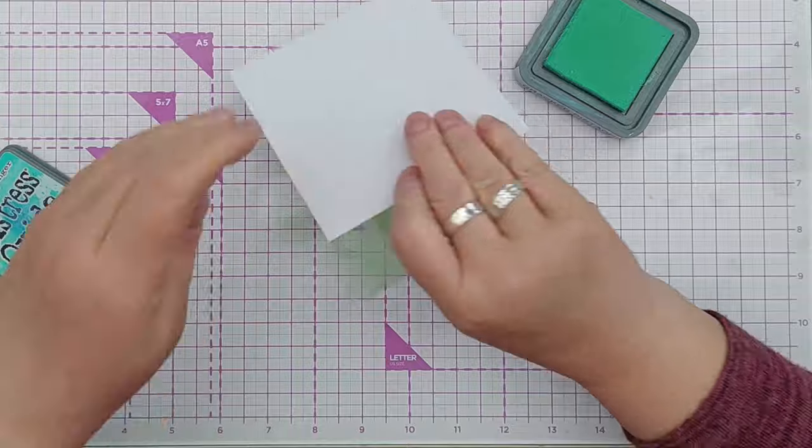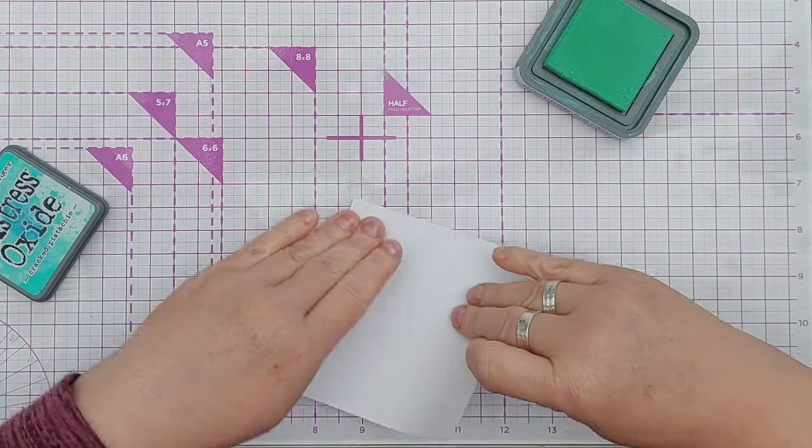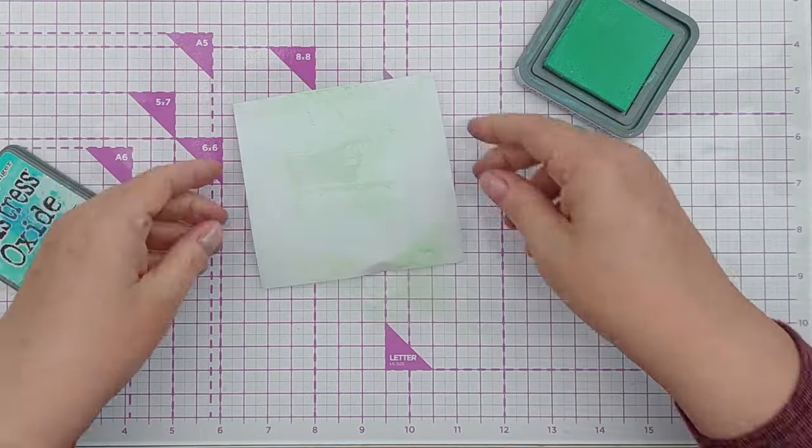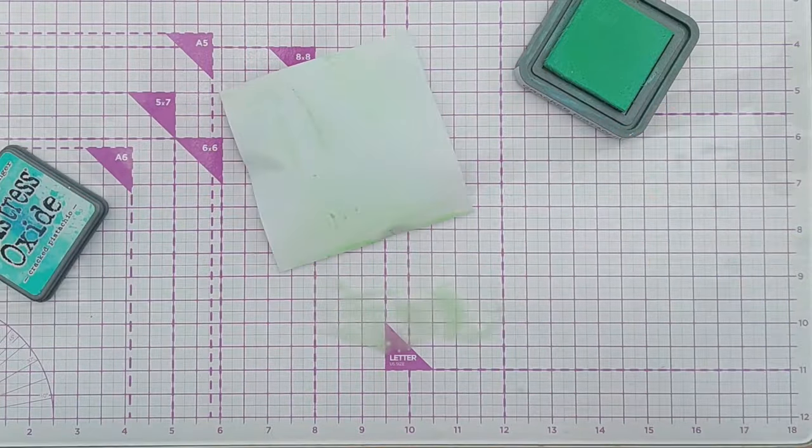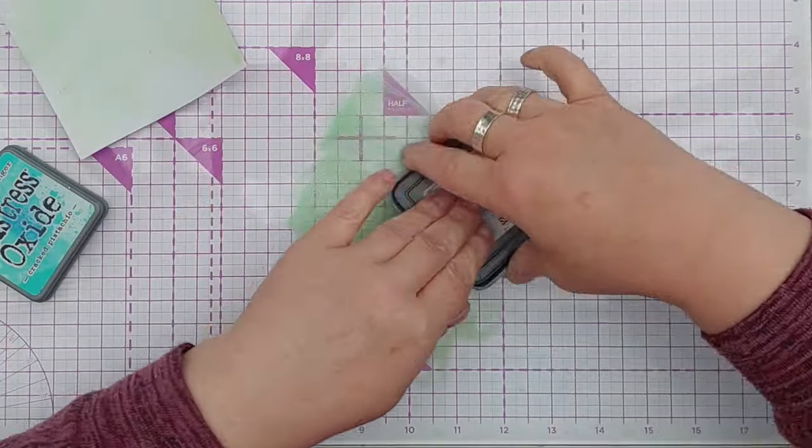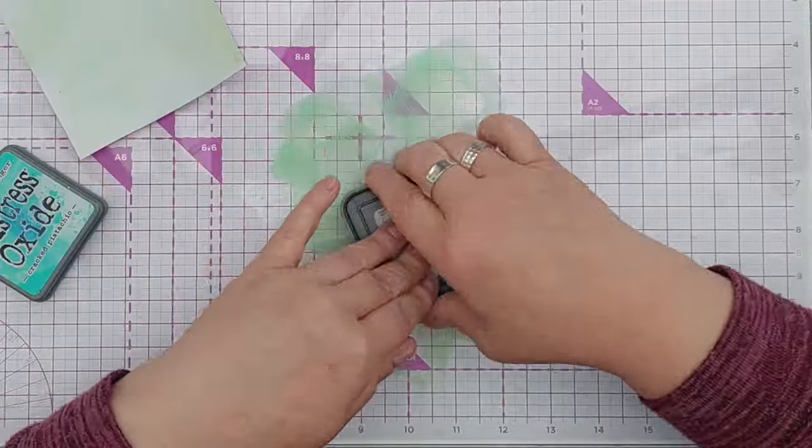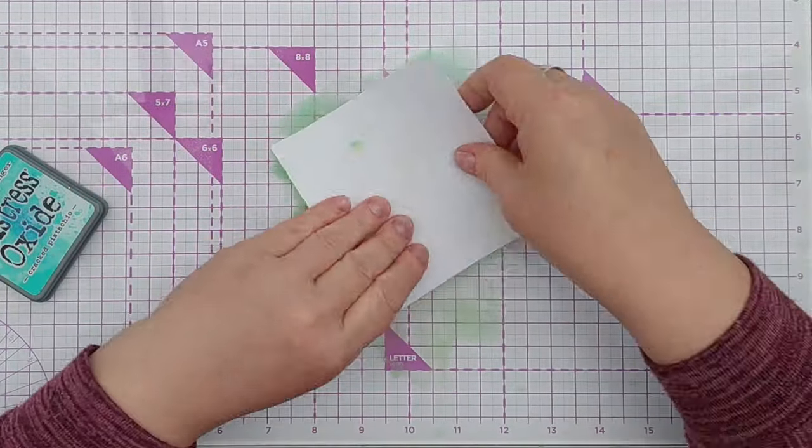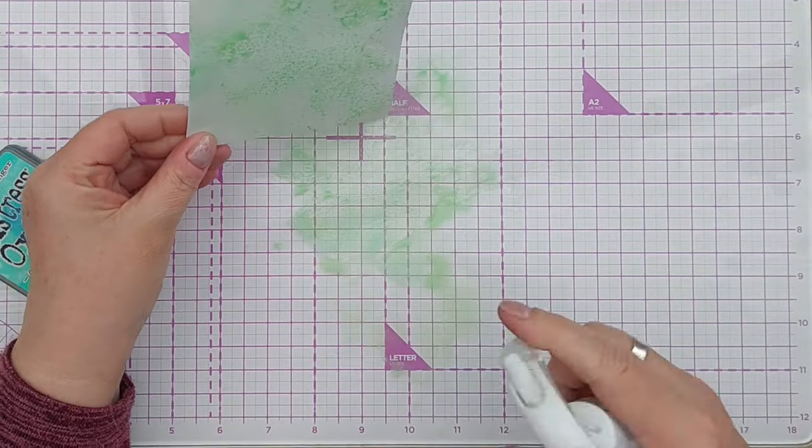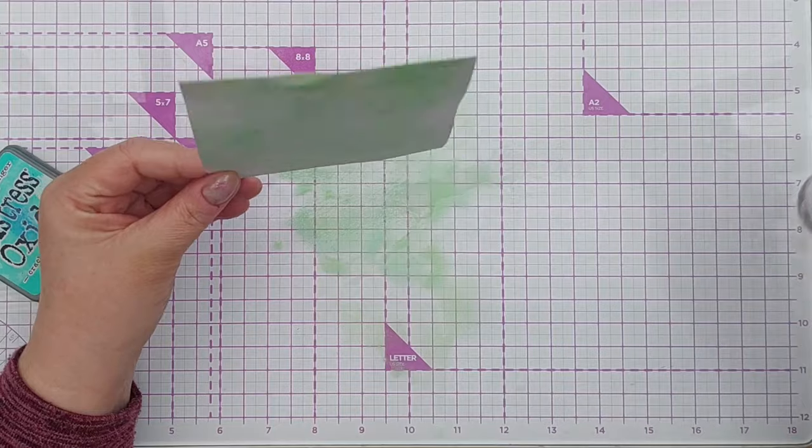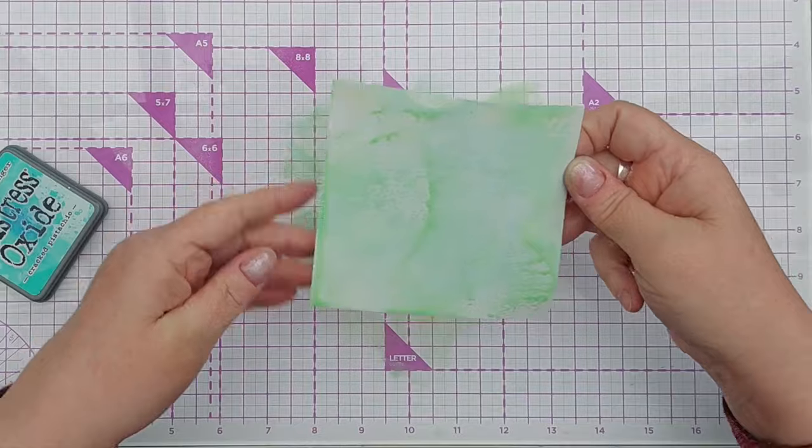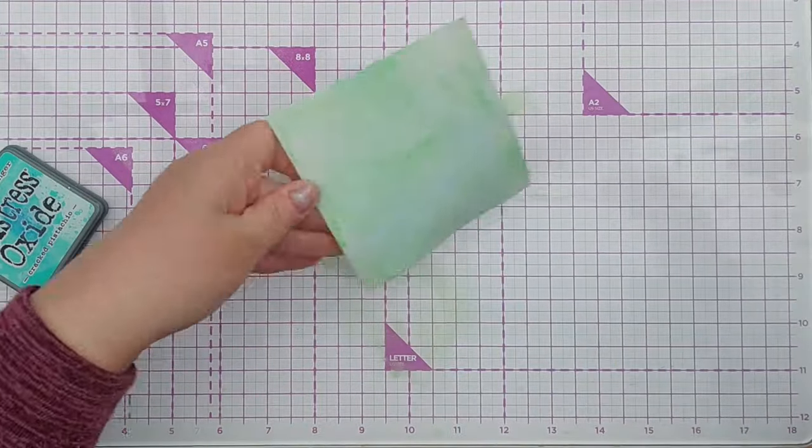Now I'm going to color this in a watercolory looking amount of Cracked Pistachio. I'll dry that and then I'll do it again to intensify the color a bit. Give that a bit of a mist to soften any harsh marks because I want a nice soft gentle watercolory look.